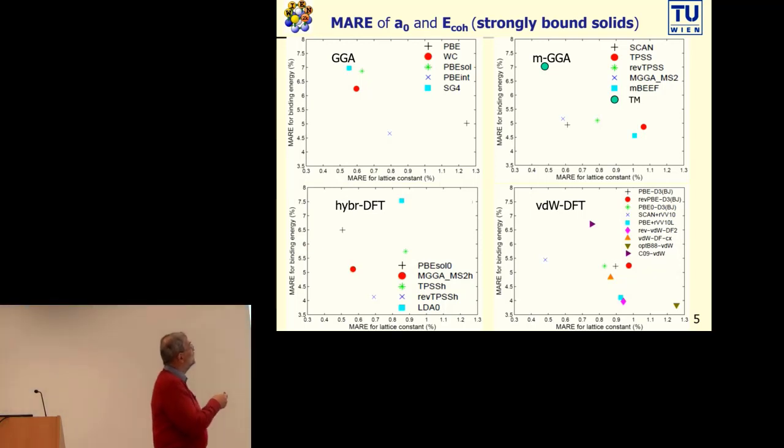However, there is a big difference. With GGAs it's not possible with one GGA to reach the same accuracy. If you want an accurate GGA in lattice constant, you have to pay a price and your binding energy will be less accurate. This is particularly not true for meta-GGAs. Modern meta-GGAs may reach both quantities on an equal footing.